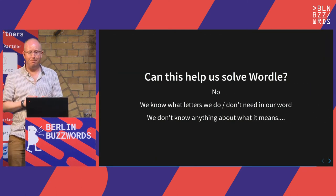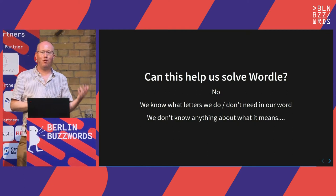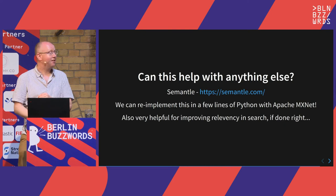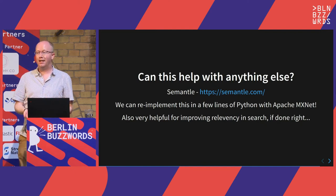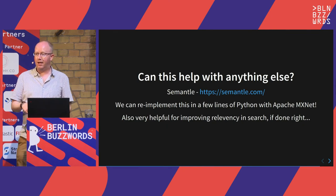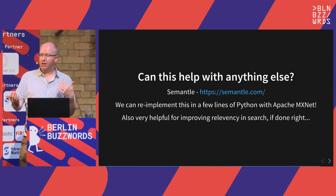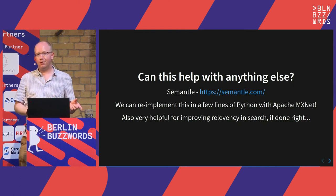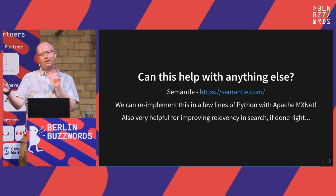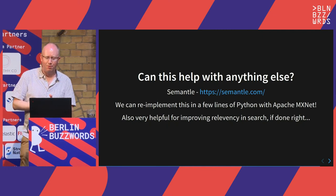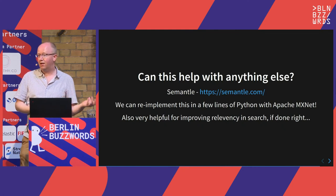Can word embeddings help us solve Wordle? No — knowing what the word means doesn't help in Wordle; we just need to know what the letters are. But Semantle — anyone played that? It's a bit like Wordle but with semantic meaning. It turns out we can redo that in a few lines of Python, which is fun. All the code is on GitHub — you can have a play. It will calculate the distance between different words and give you a hint. It turns out it's really, really hard.